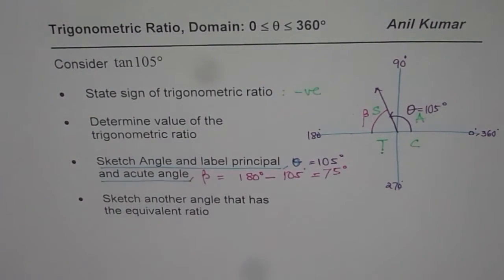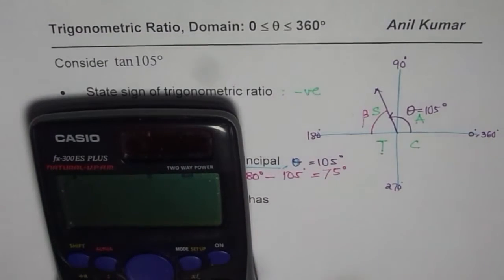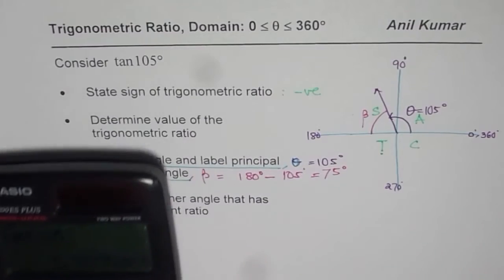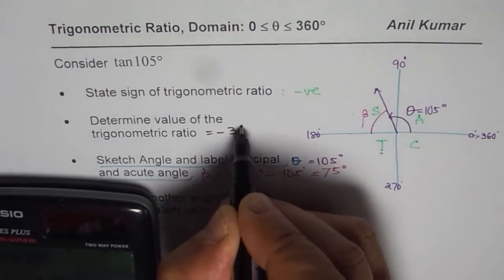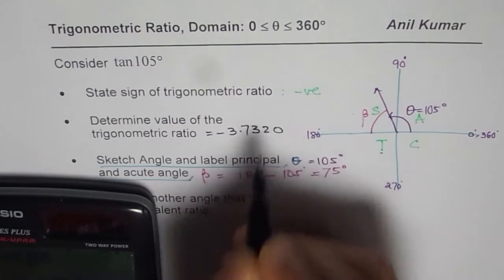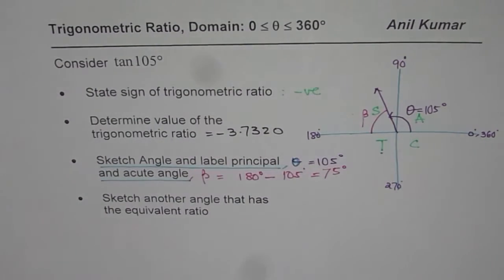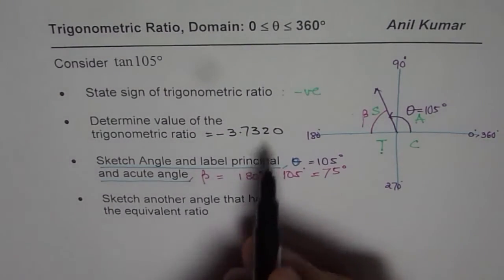Now the question is, determine value of the trigonometric ratio. So this we can do with the help of calculator. Tan 105 equals to, we get minus 2 minus square root 3. In decimal, it gives us minus 3.7320. So we will write down the value, which is equal to minus 3.7320. Since they did not mention how many places to round, we will just keep it as such.